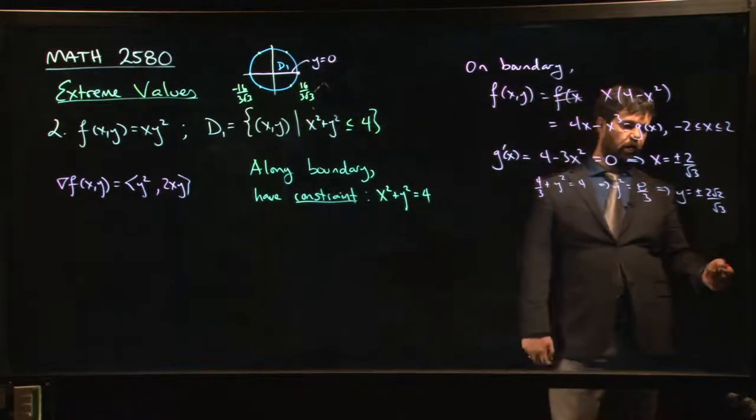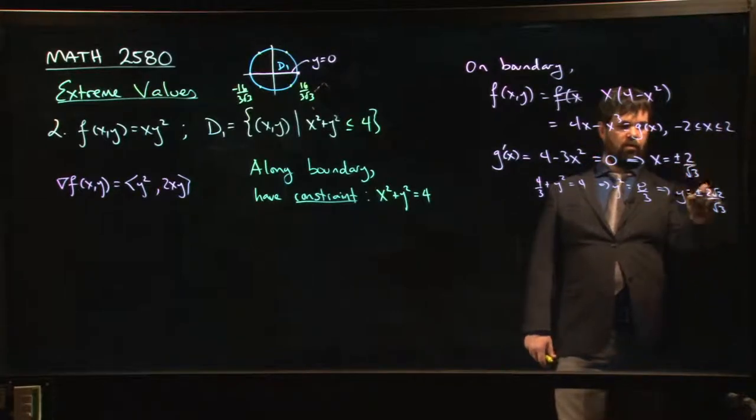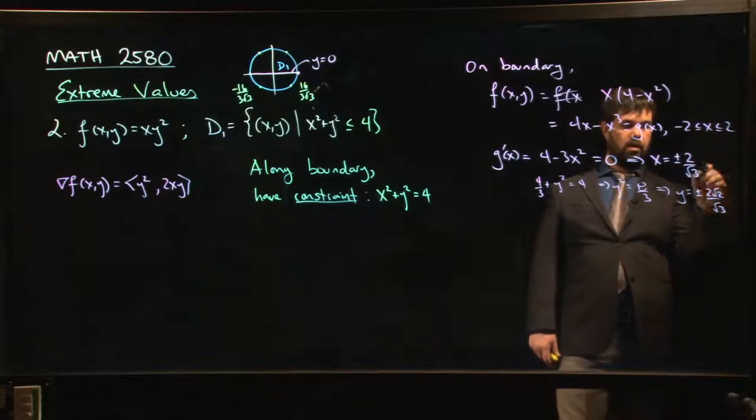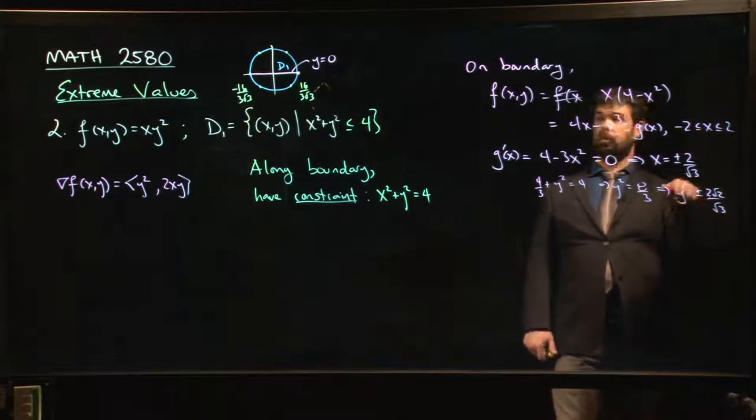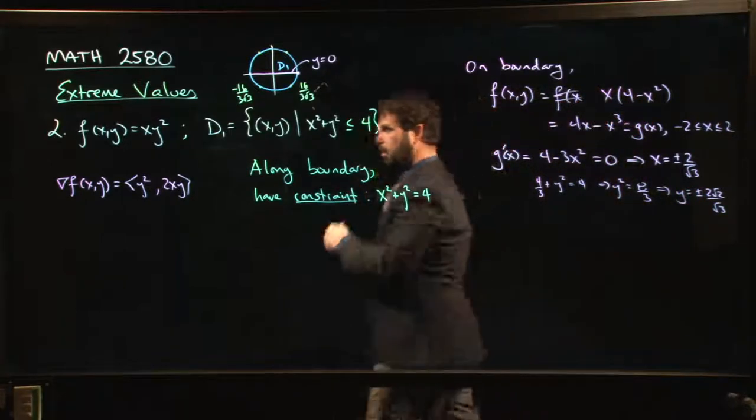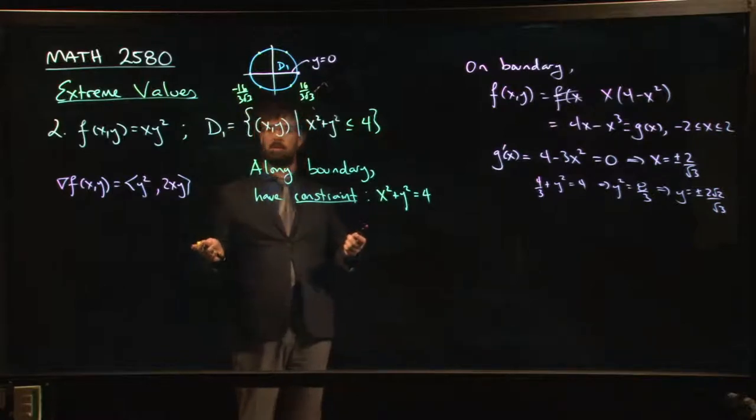And I can do x times y and it's going to be either plus or minus, well, 2 times 2 times 2 times another 2, so that's 16, 16 over 3 root 3, same as before. We get the same answer. So that's pretty cool.